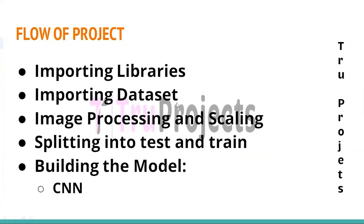The second step is importing the dataset. The dataset containing authenticated and manipulated images is imported. This dataset serves as input for training and testing the CNN model, consisting of a diverse set of images including both genuine and forged ones. The third step is image processing and scaling — the imported images are processed and scaled to ensure uniformity, applying techniques like resizing, normalization, and data augmentation to improve model generalization.